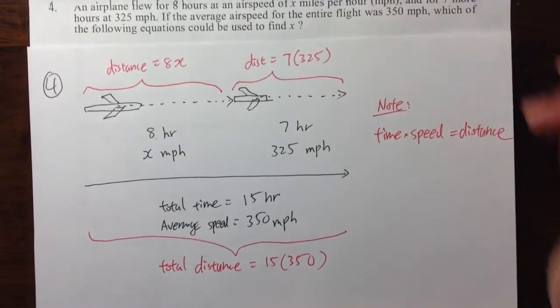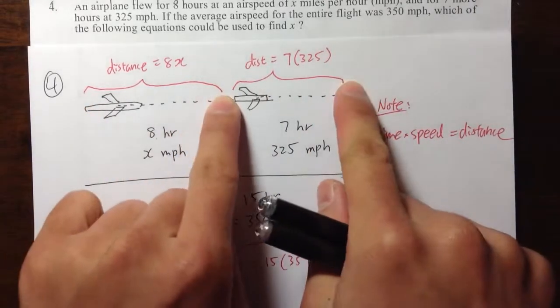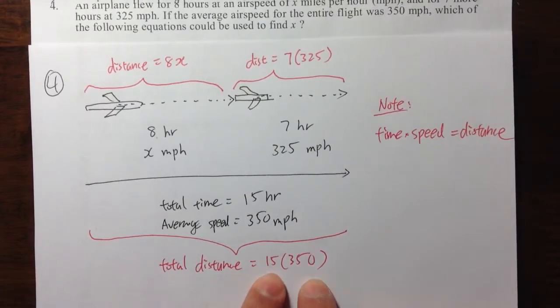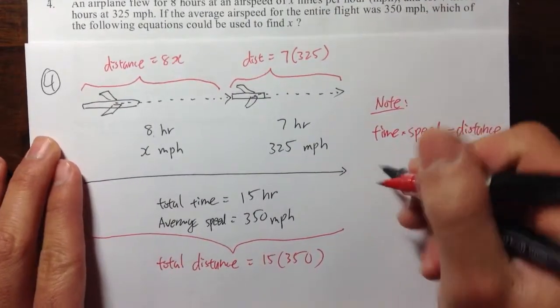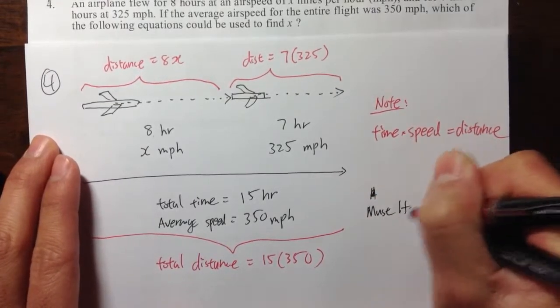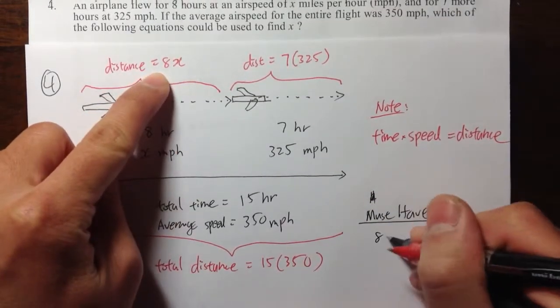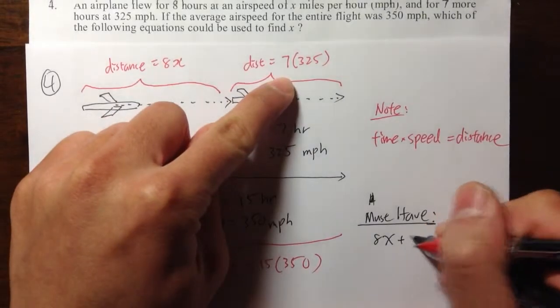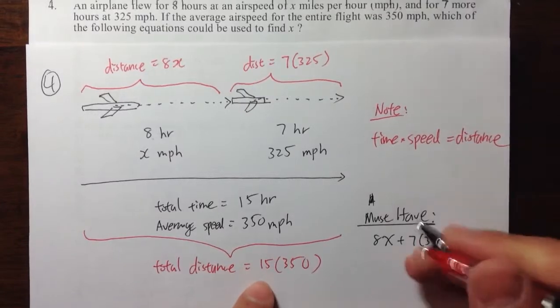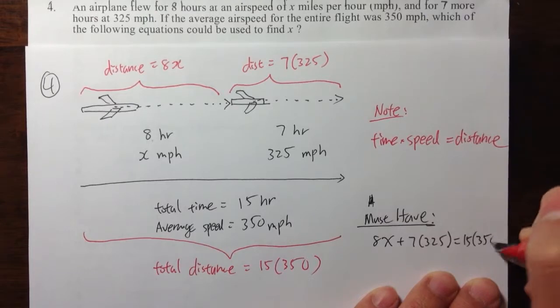So with this picture, what conclusion can we draw? Well, this is the first part, and that's the second part. These two parts together must add up to the total distance, which is this. So, I can just say that, we must have the following. When we have 8x plus 7 times 325, we must have this is equal to 15 times 350. 15 times 350. So this is the equation that we can use to solve for x, because this distance plus that distance has to equal to the entire trip, the entire distance.